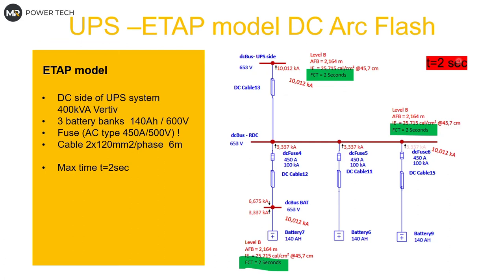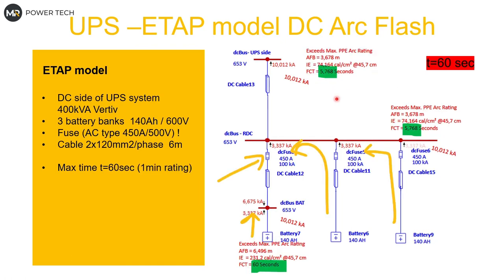Initially I set the calculation for the two-second rule from NFPA just to check results. We ended up with 25 cal/cm² everywhere at two seconds — clearly not correct, something had to be done with the protection. I then extended the limit to 60 seconds to see what would actually happen. On the main bus, it came to 74 cal/cm² because it took almost six seconds to trip — a very long time. And on each battery, making a fault on the battery itself showed 230 cal/cm² at 60 seconds — a huge amount, taking nearly a full minute.